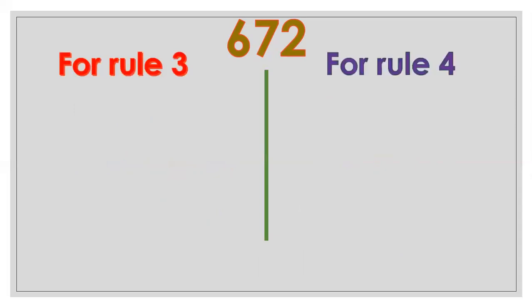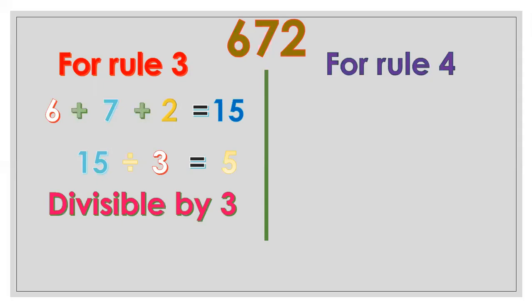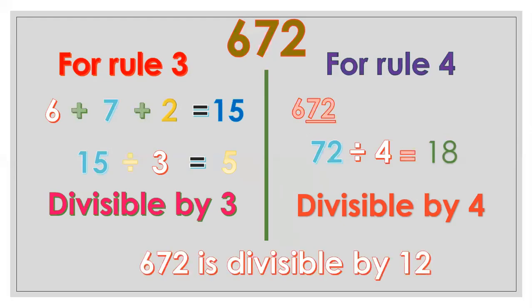Another example: 672. For divisibility by 3: 6 plus 7 plus 2 equals 15, and 15 divided by 3 equals 5, so it is divisible by 3. For divisibility by 4, the last two digits are 72. Since 72 divided by 4 equals 18, it is divisible by 4. Therefore, 672 is also divisible by 12.